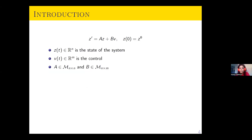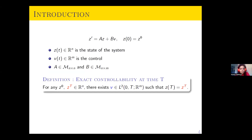Let's begin with the first point. Here I consider a finite dimensional system. Z(T) will stand for the state of the system at time T, V(T) is the control, and A and B are matrices, where A is a square matrix.